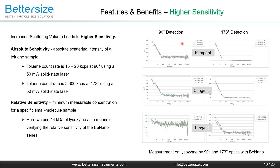Another important feature of the backscattering technology is the increased scattering volume, which leads to higher sensitivity. Two types of sensitivities are usually used for DLS analyzers. One is absolute sensitivity, defined as the absolute scattering intensity of a toluene sample. With a 50-mW solid-state laser, the toluene count rate is 15 to 20 kilocounts per second (kcps) at 90 degrees, whereas the toluene count rate is more than 300 kcps at 173 degrees. In terms of absolute sensitivity, backscattering optics is at least 10 times as sensitive as the 90-degree optics.